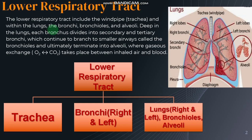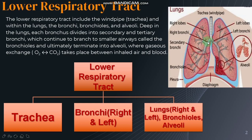Deep in the lungs, each bronchus divides into secondary and tertiary bronchi, which have cartilages. These bronchi further branch into smaller airways called bronchioles, which ultimately terminate into alveoli — the organs where the exchange of gases takes place between the inhaled air and the blood. The alveoli terminate into balloon-like structures known as alveolar sacs, where the actual process of gas exchange takes place.